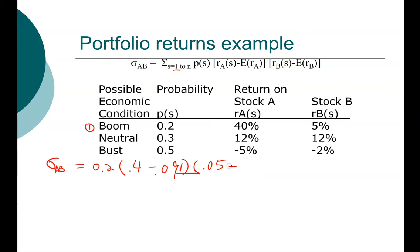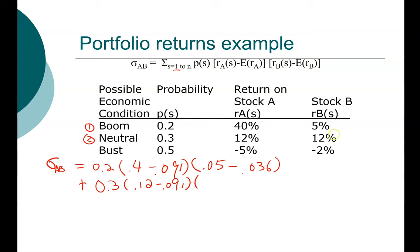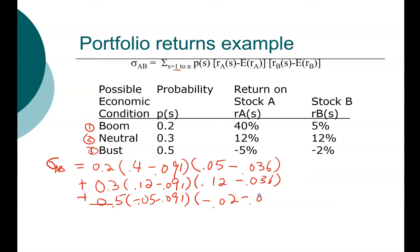For stock B, we get a return of 5% when we're expecting a 3.6% return. That's our value for scenario one. In the second scenario, which is neutral, the probability is 30%. Stock A returns 12% versus an expectation of 9.1%, and stock B also returns 12% versus an expectation of 3.6%. In the last scenario, the economy goes into a bust, with a 50% chance. Stock A will lose 5% when we're expecting 9.1%, and stock B will lose 2% when we were expecting 3.6%. That gives us our covariance.